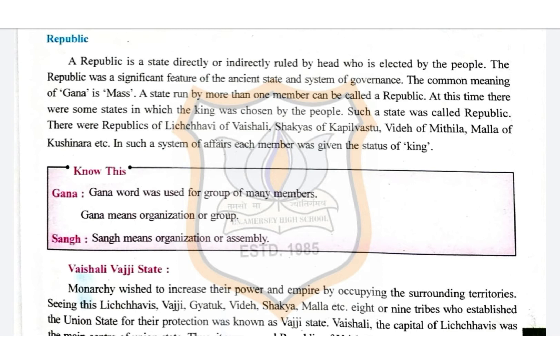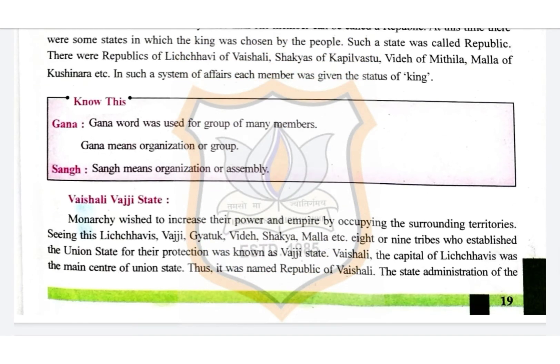The common meaning of 'gana' is mass. A state run by more than one member can be called a republic. At times there were some states in which the king was chosen by the people — such a state was called a republic. There were republics of Lichchhavis of Vaishali, Shakyas of Kapilvastu, Videhas of Mithila, and Mallas of Kushinara.